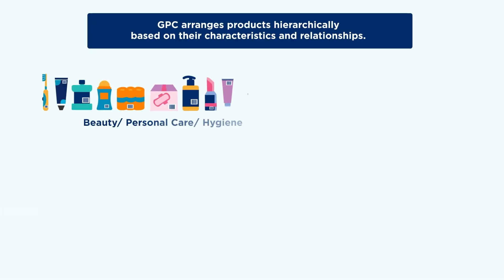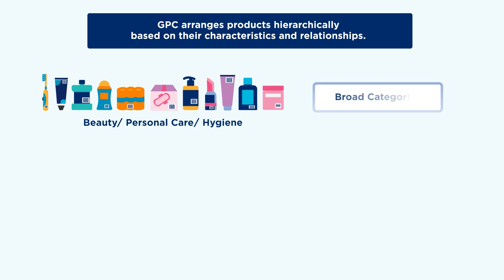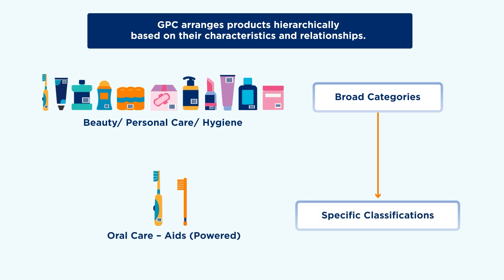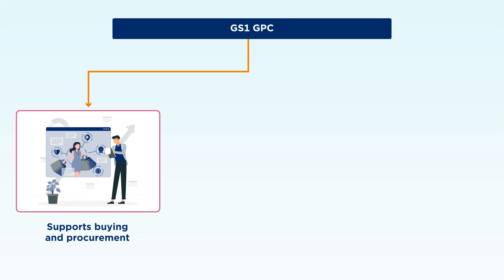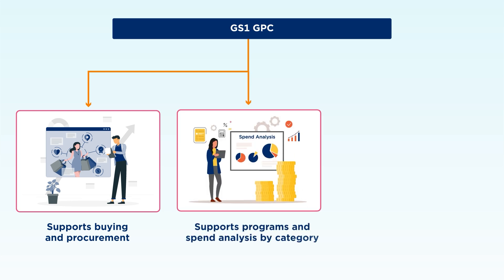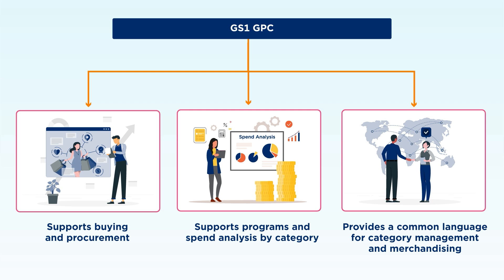It arranges products hierarchically based on their characteristics and relationships, from broad categories to specific classifications. GPC supports buying and procurement programs and spend analysis by category, providing a common language for category management and merchandising.